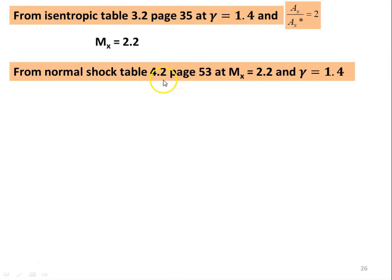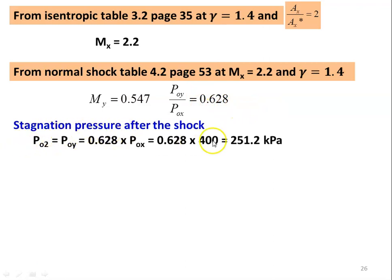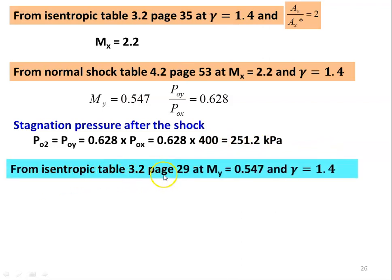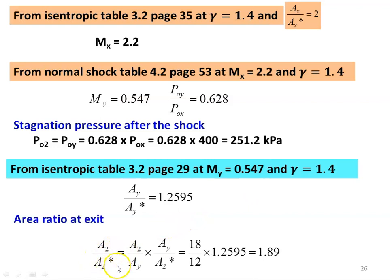From the normal shock table, table 4.2, page 53, at Mx = 2.2 and gamma = 1.4, we take My = 0.547 and POy/POx = 0.628. So the stagnation pressure after the shock: PO2 = POy = 0.628 × 4 bar = 251.2 kPa. From the isentropic table 3.2, page 29, at My = 0.547, we take Ay/Ay* = 1.2595. Area ratio at exit: A2/A2* = (A2/Ay) × (Ay/Ay*) = (18/12) × 1.2595 = 1.89.